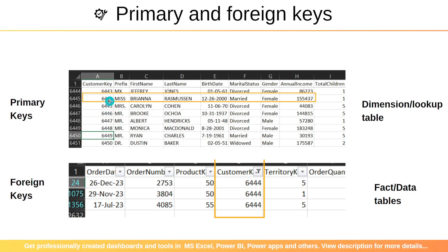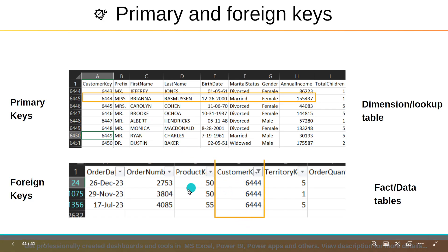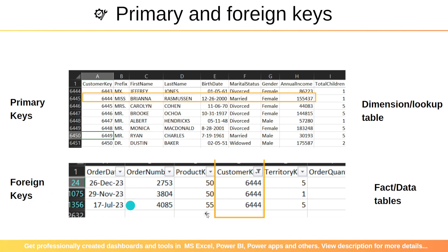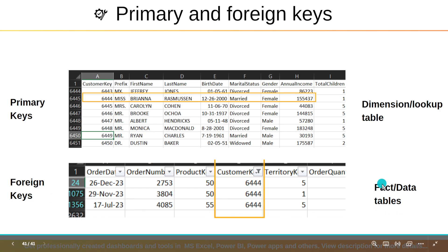A customer can purchase multiple times, so customer 6444 has purchased product ID 50, product ID 50, and product ID 55. A customer can purchase a lot of items. The table which contains multiple instances of the same line item is known as the foreign keys table, and these tables are also treated as fact or data tables.